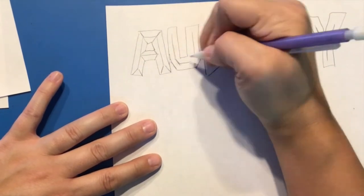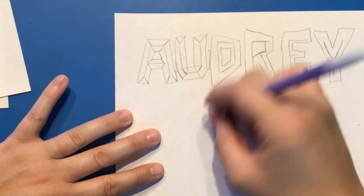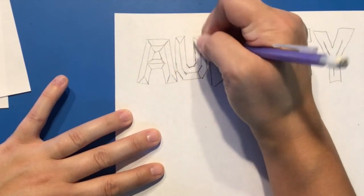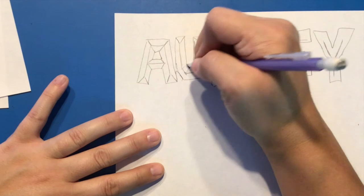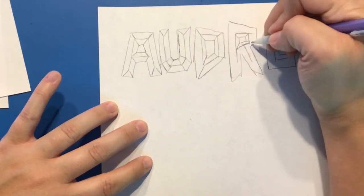Once you have that in place, then you're going to connect your corners with diagonals. This will create the look that it has multi-facets or a chisel, like it's been carved out of stone.